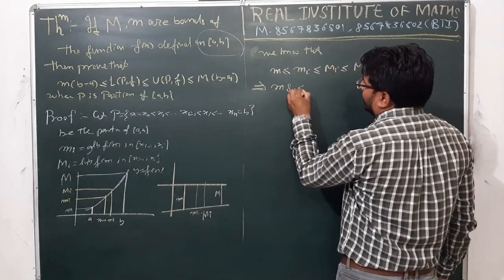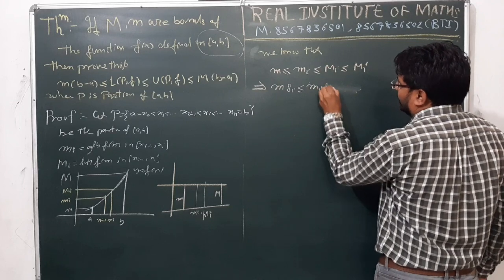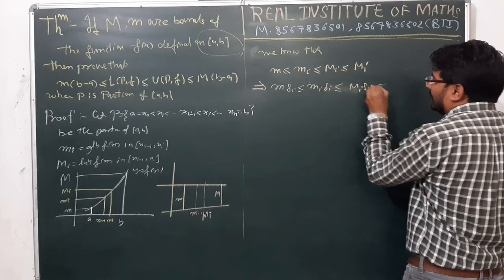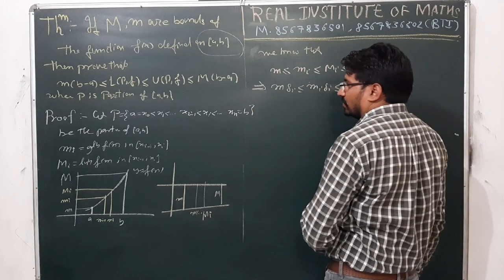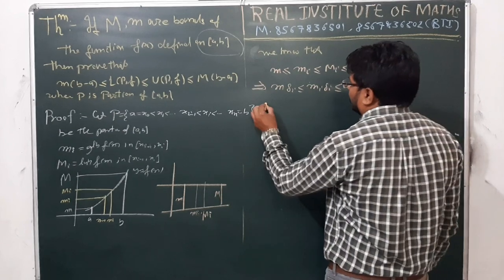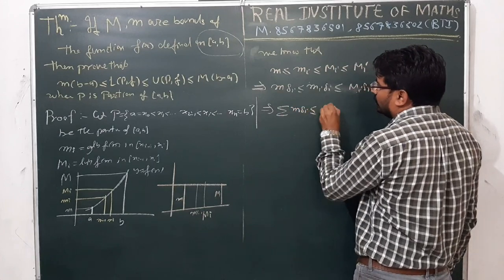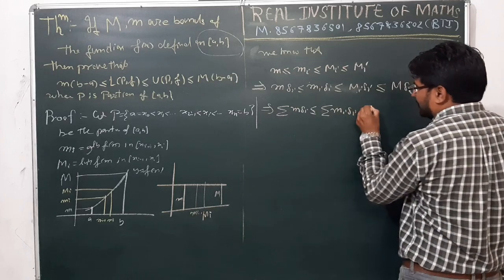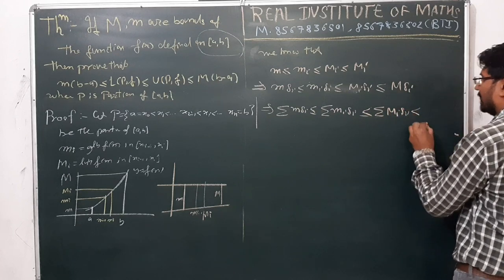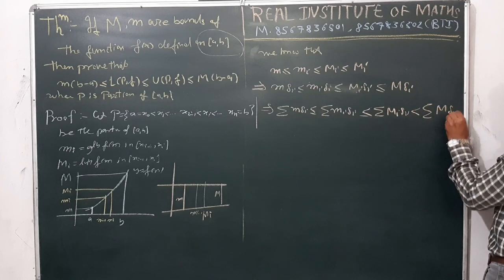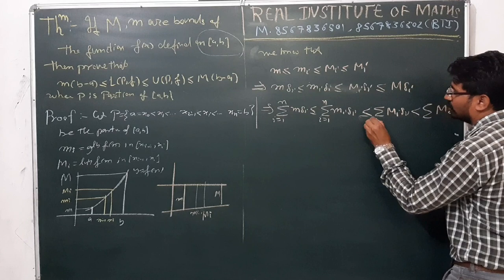We multiply throughout the inequality by Δᵢ (delta i). So this gives us m·Δᵢ ≤ mᵢ·Δᵢ ≤ Mᵢ·Δᵢ ≤ M·Δᵢ. Taking the summation with i running from 1 to n: Σ m·Δᵢ ≤ Σ mᵢ·Δᵢ ≤ Σ Mᵢ·Δᵢ ≤ Σ M·Δᵢ.